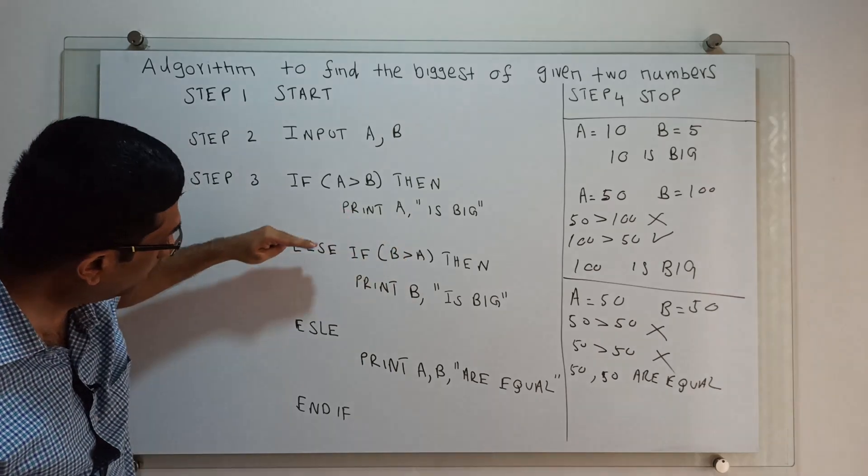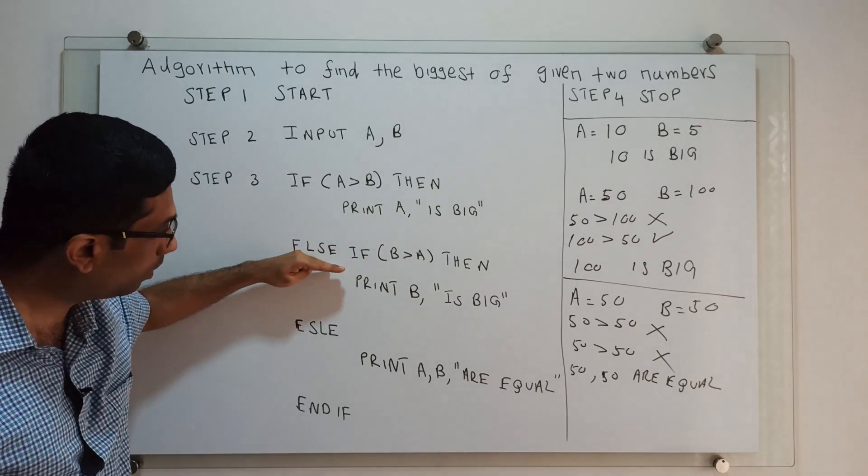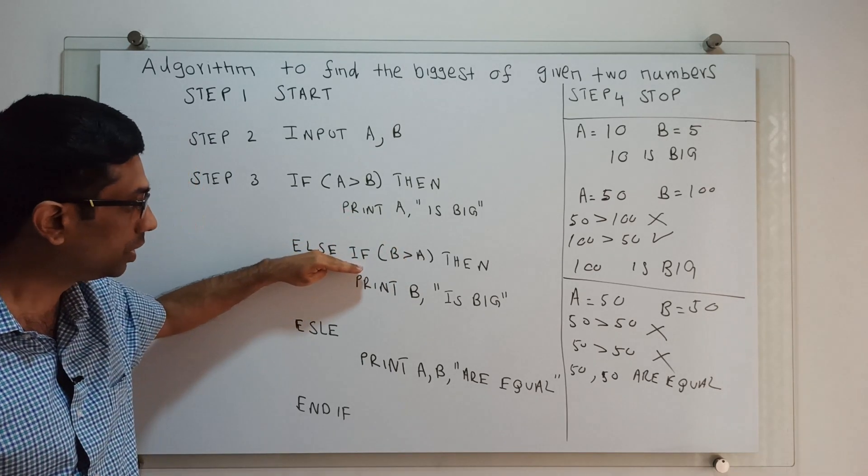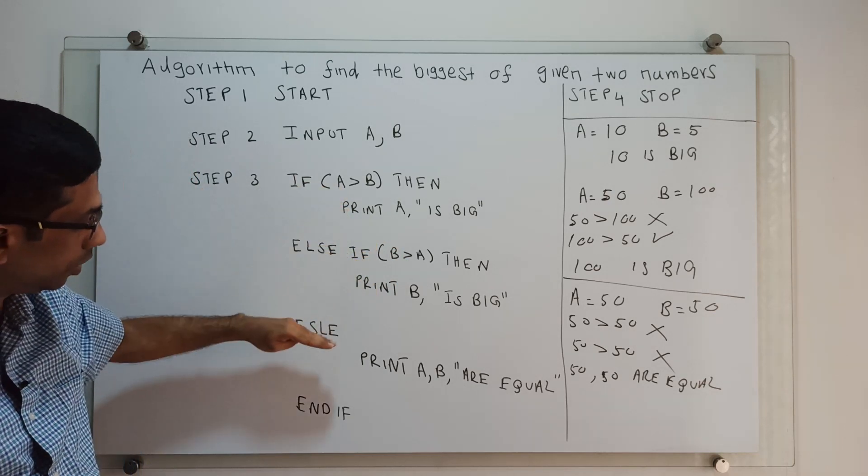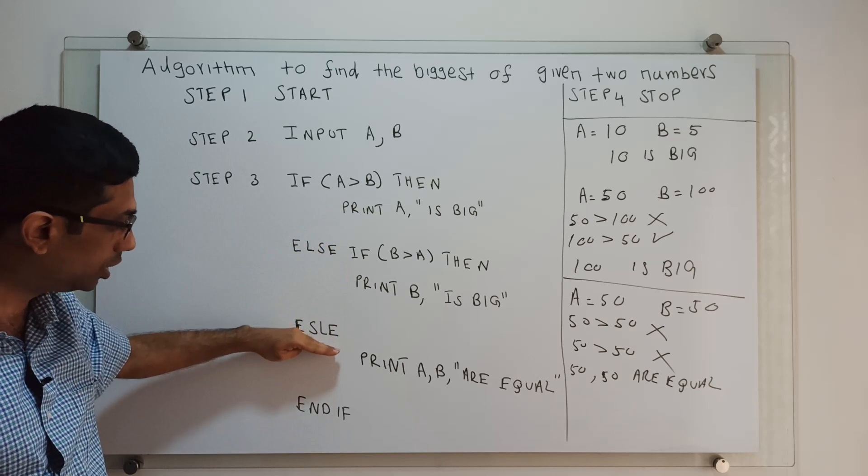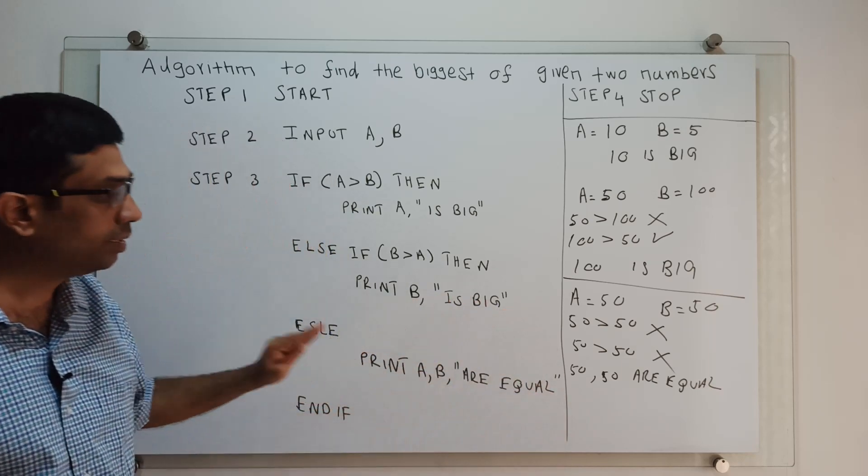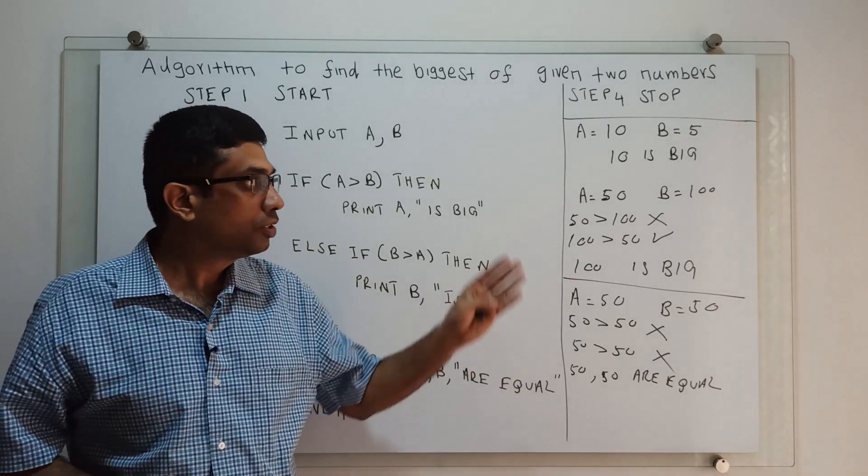If true, it will execute. We can add any number of else-if blocks. For our problem, only one else-if is sufficient. If the else-if is false, if the condition is false and the else-if condition is false, then the control will come to the else block and execute the statement under the else block.